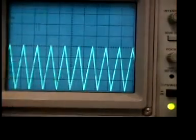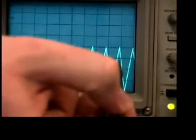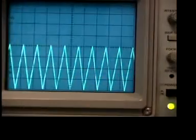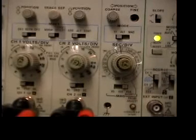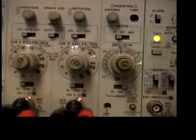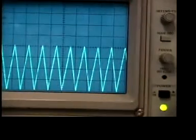And again, count the number of cycles, count the number of time divisions. Record the seconds per division knob, which right now is at 0.5 milliseconds. And you're going to go on and so on and so forth.